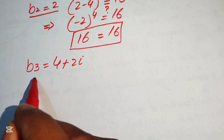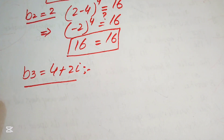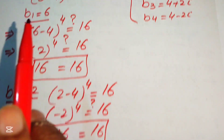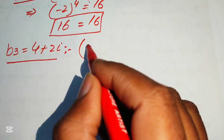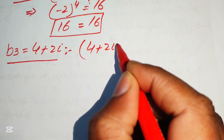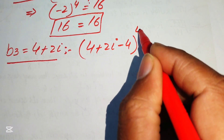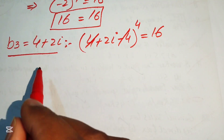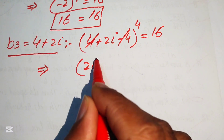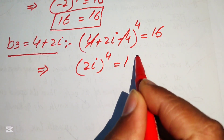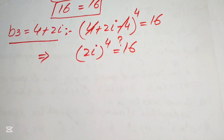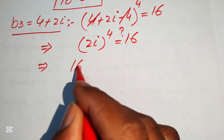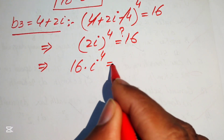For b3 equals 4 plus 2 iota: substituting into the left hand side gives (4 plus 2 iota minus 4) to the power 4 equals 16. The plus 4 and minus 4 cancel, leaving (2 iota) to the power 4 equals 16. We need to check whether this equals 16.